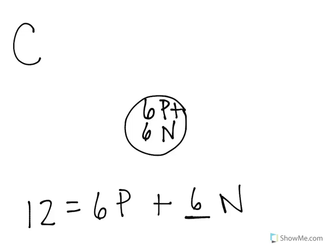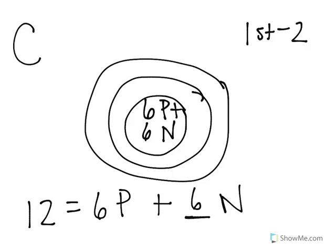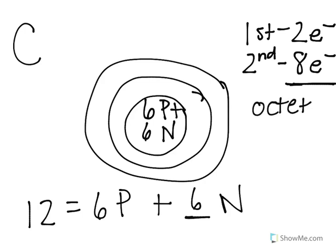Now we can look at the electrons. Electrons are organized in orbitals around the nucleus, and there are different numbers of electrons in each orbital. The first orbital can contain two electrons, and the second and subsequent orbitals contain eight electrons total. Atoms are most stable when they have a complete outer orbital — either eight electrons if it's the second orbital, or two electrons if they only have one orbital. This is called the octet rule.